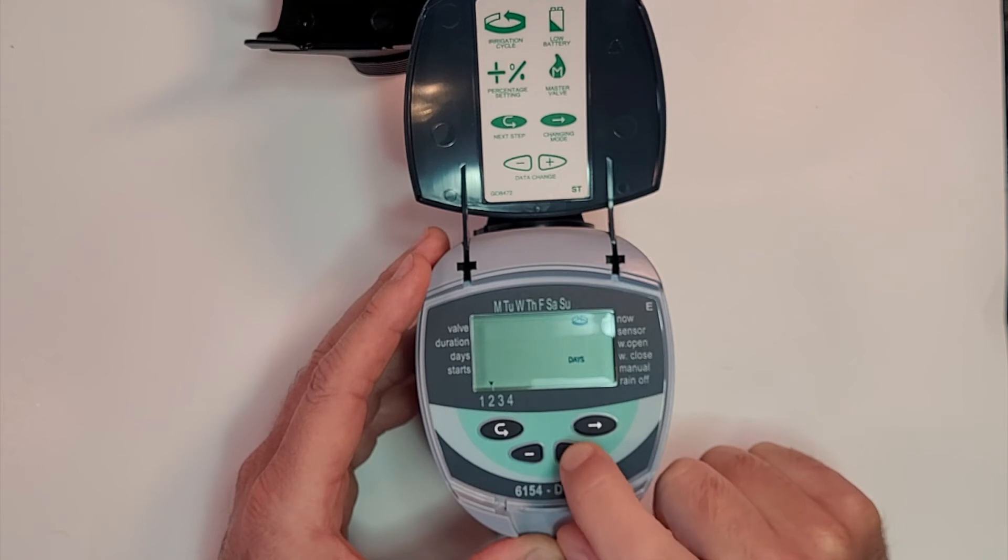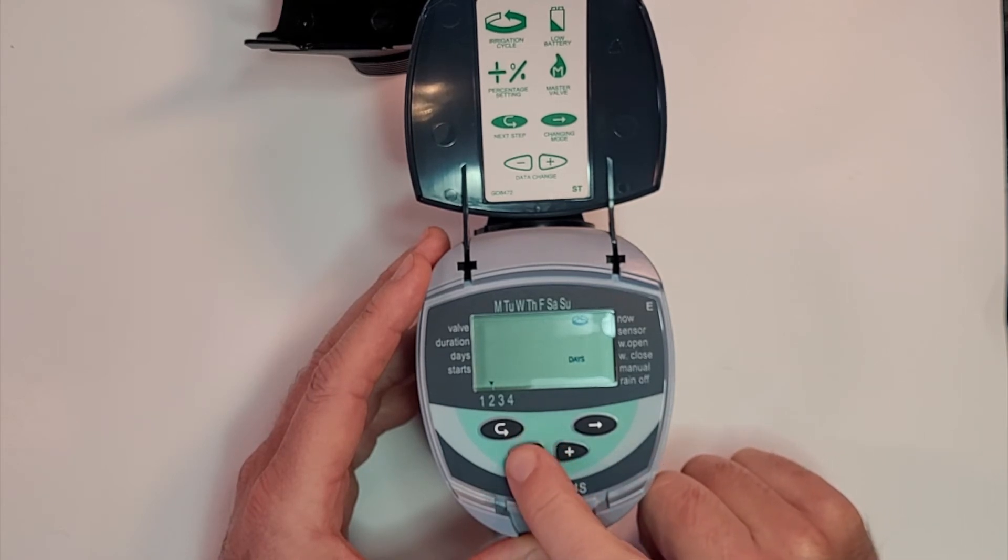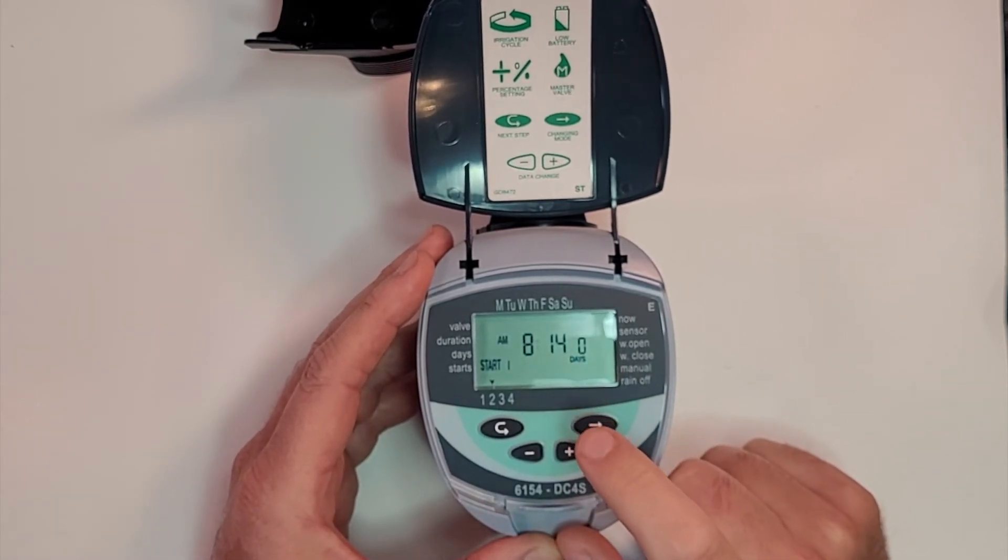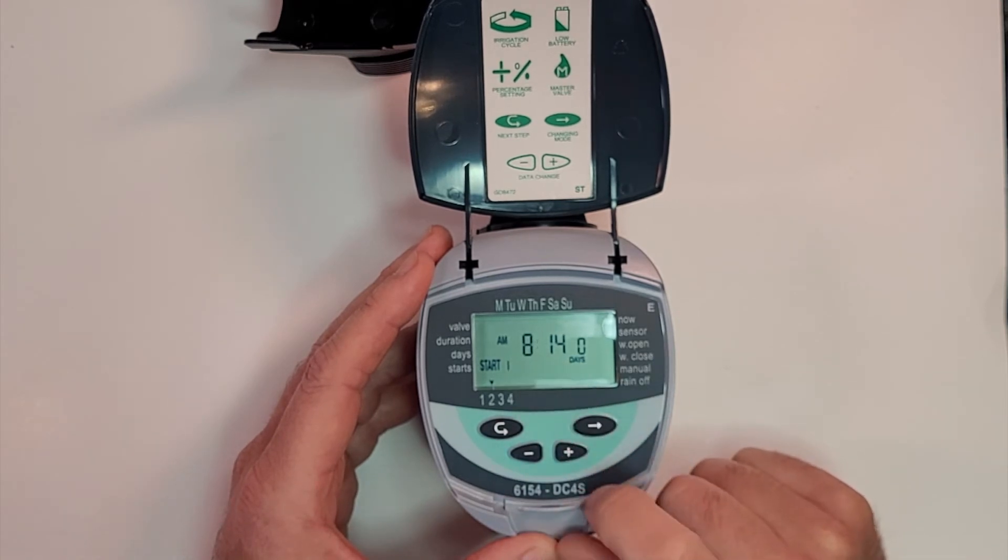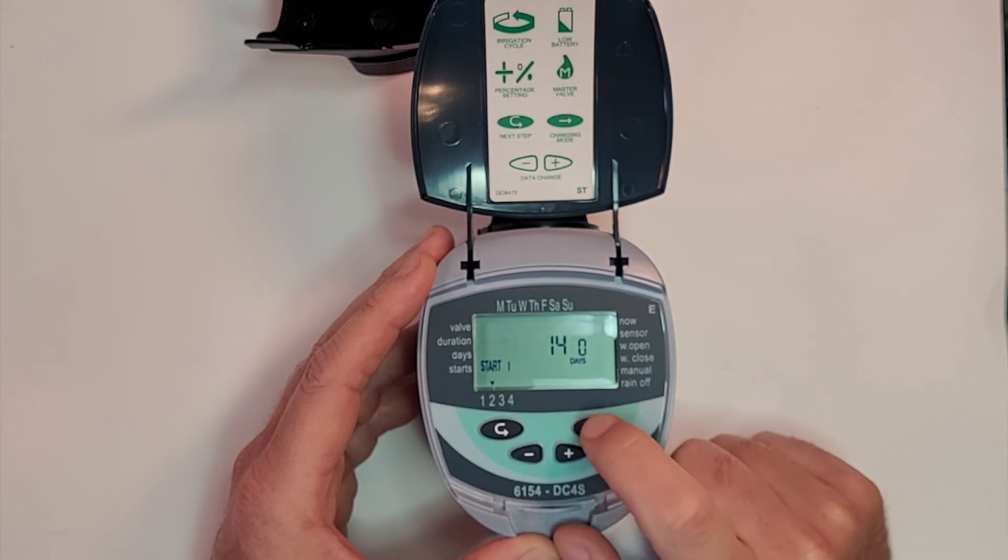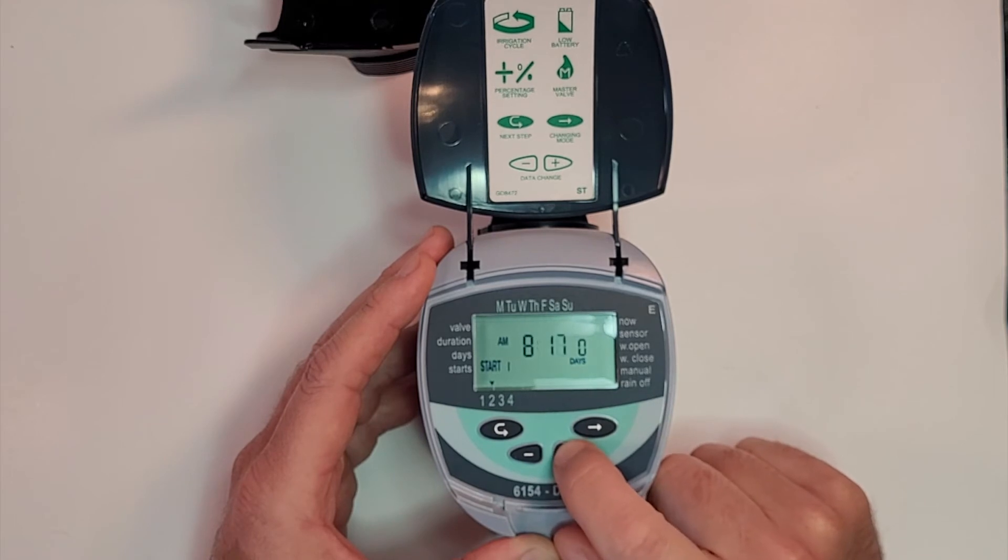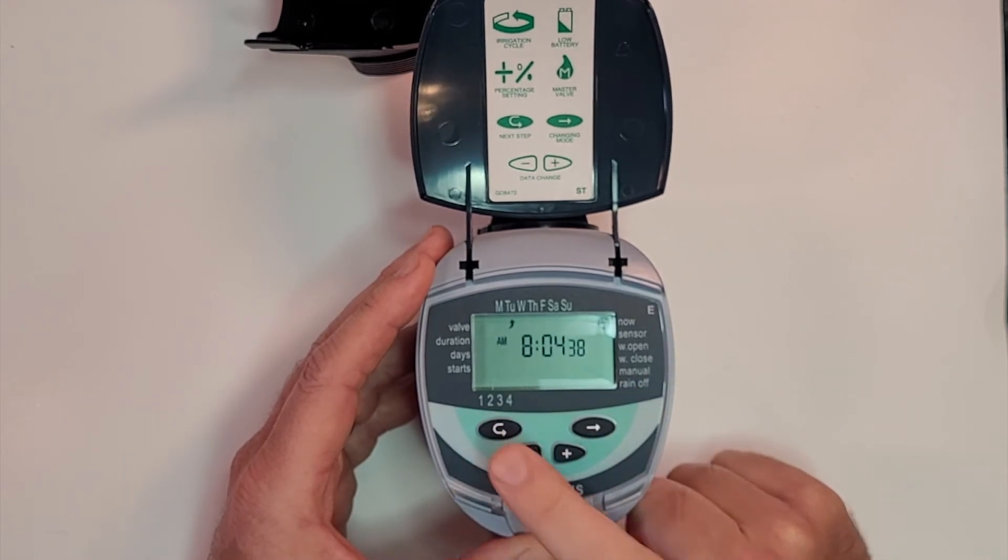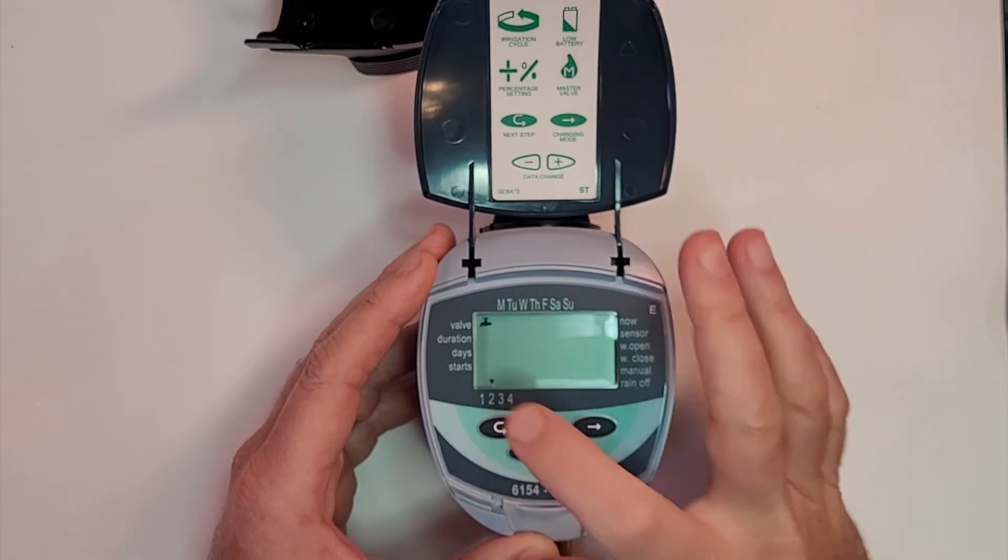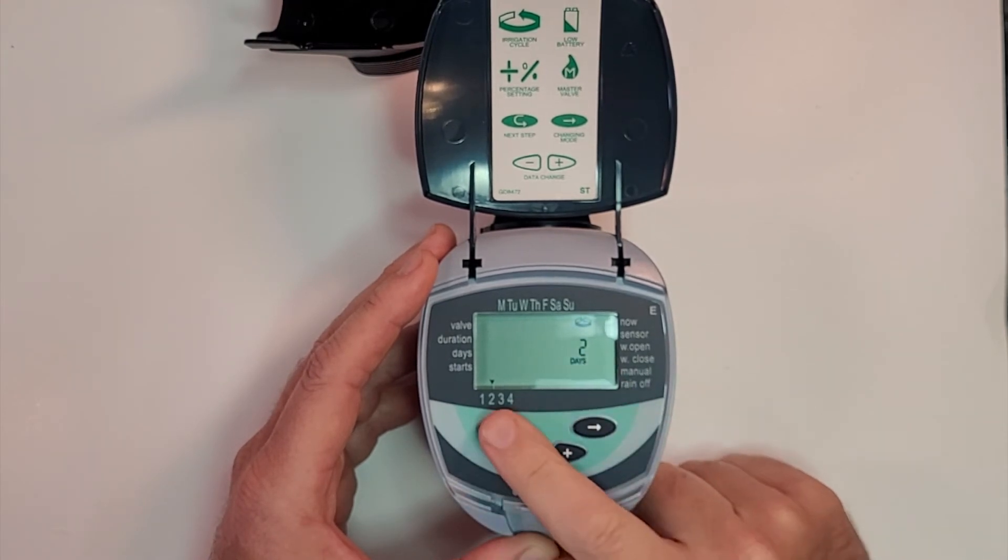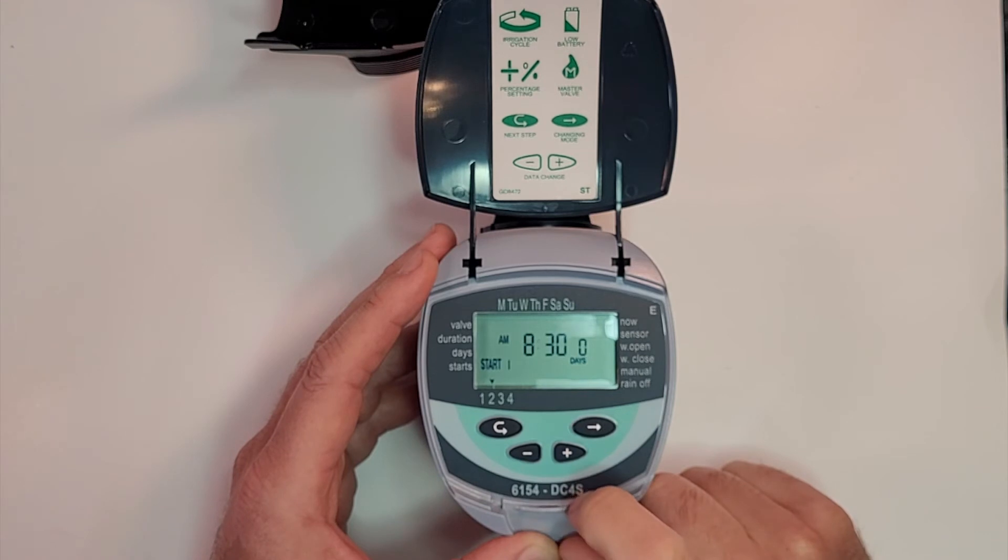Now we're going to run for two days. Start one is at 8:14. We want to run it every other day, but we want to run it starting at 8:30. So valve number two is set for a duration of 20 minutes every two days and it starts at 8:30 AM, no rain sensor, no manual button.